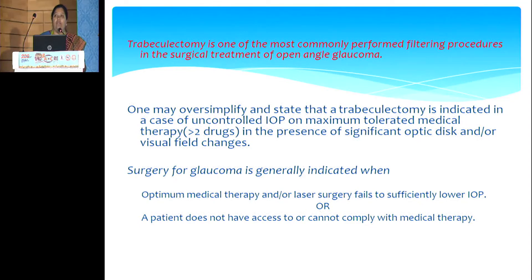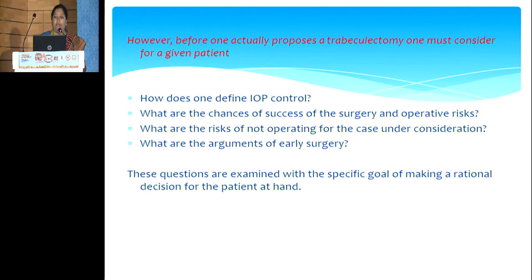Surgery for glaucoma is generally indicated when optimum medical therapy or laser fails to sufficiently lower IOP, or a patient does not have access to or cannot comply with medical therapy. However, before proposing a trabeculectomy, one must consider how to define IOP control, the chances of success and operative risks, the risks of not operating, and the arguments for early surgery. These questions are examined with the goal of making a rational decision for the patient at hand.